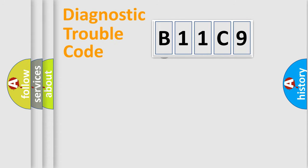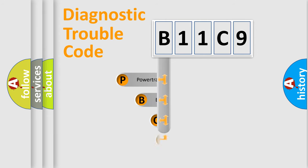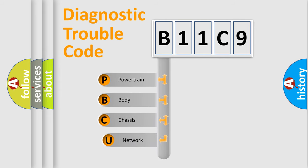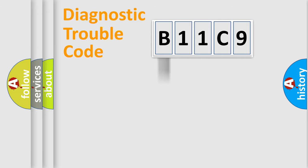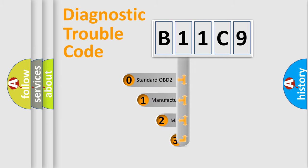First, let's look at the history of diagnostic fault code composition according to the OBD2 protocol. We divide the electric system of an automobile into four basic units: powertrain, body, chassis, and network. This distribution is defined in the first character of the code.